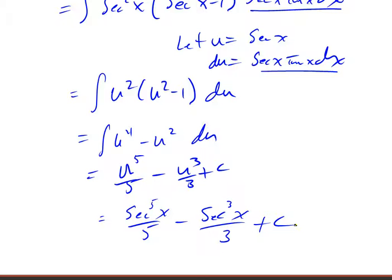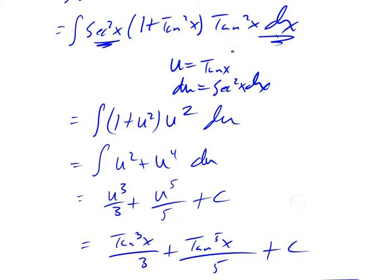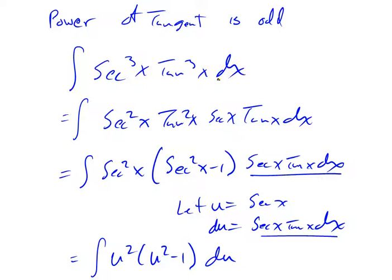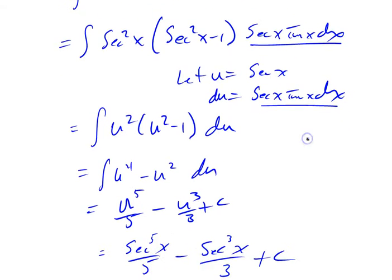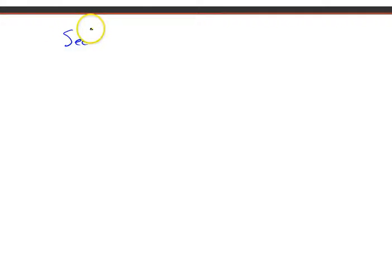So: when you've got an even number of secants, you're looking for a tangent substitution. When you've got an odd number of tangents, you're looking for a secant substitution. If you have both, you could do either one. The problem comes in when you have neither — when you have secant raised to an odd power and tangent raised to an even power.